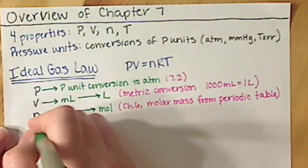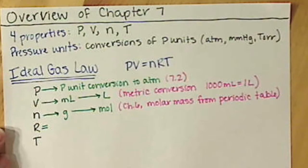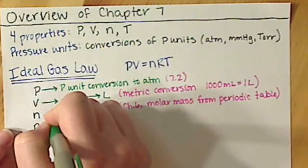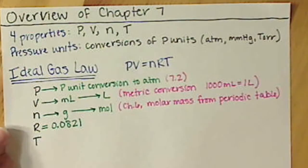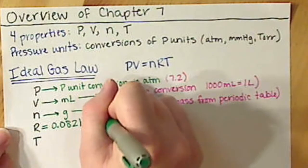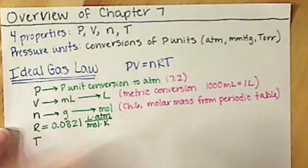R value: even though there's multiple R values out there, I recommend that you focus just on one. It reduces confusion. Basically the R value that I would use is the one that is based off of atmospheres, so 0.0821, so 0.0821 liters times atmospheres divided by moles times Kelvin.